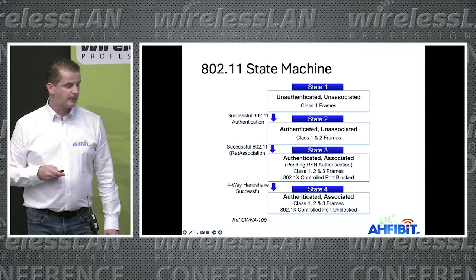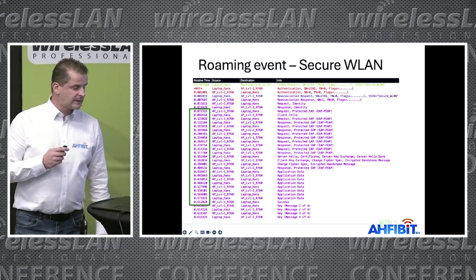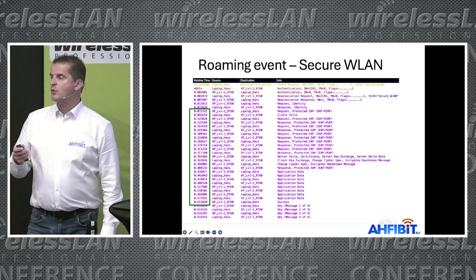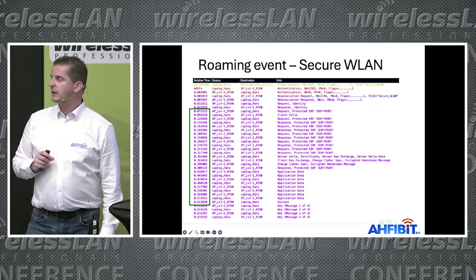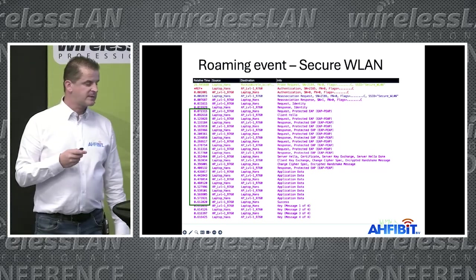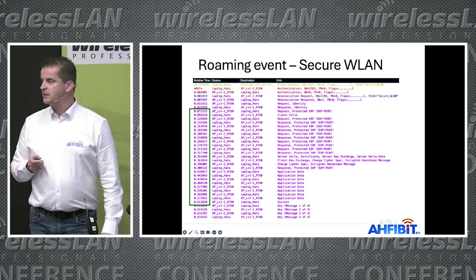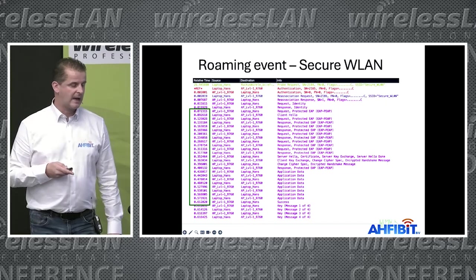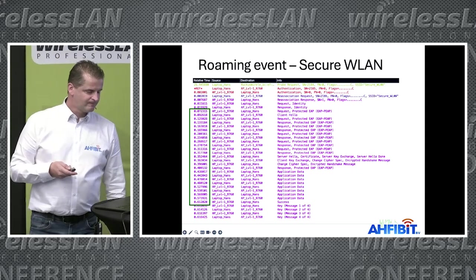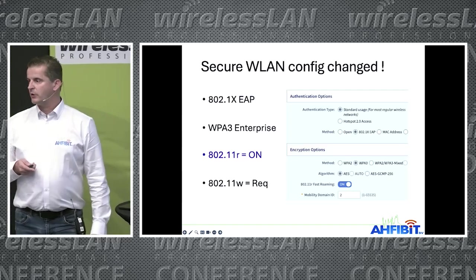Once authenticated in state 3, we run the four-way handshake and then we have an active connection. You can see the timing: from the moment I start connecting, I communicate with my RADIUS server in the cloud, and that's where I jump from 72 milliseconds all the way to 612 milliseconds. That's where the delay is happening — so I needed to speed things up by running 11r.